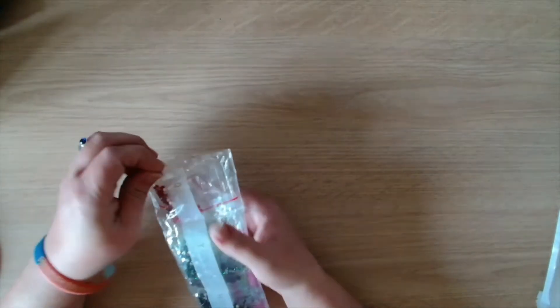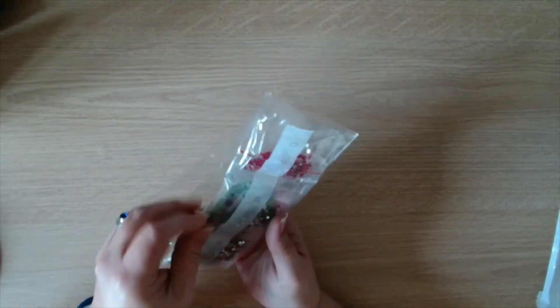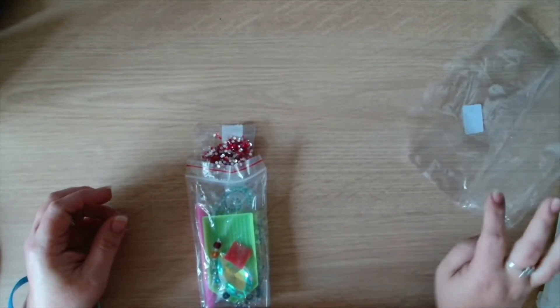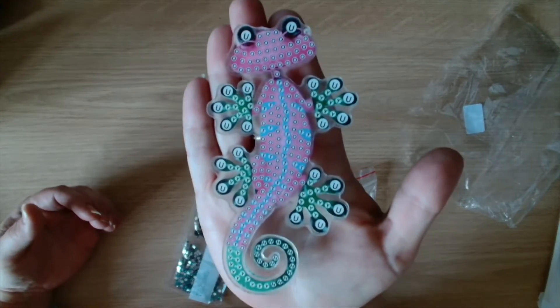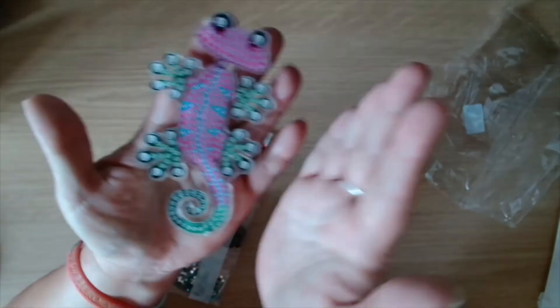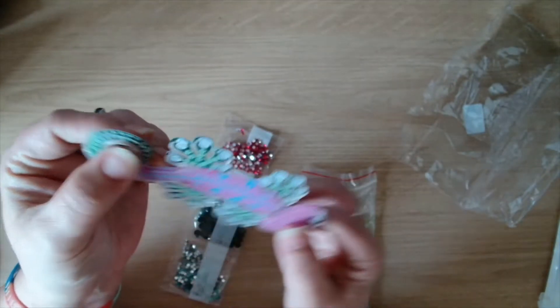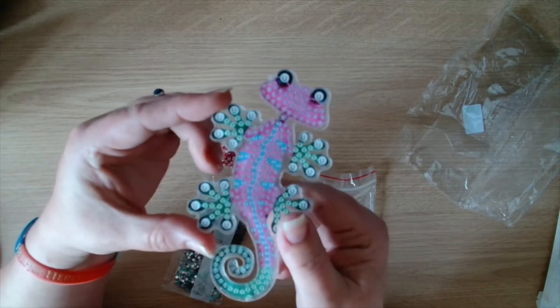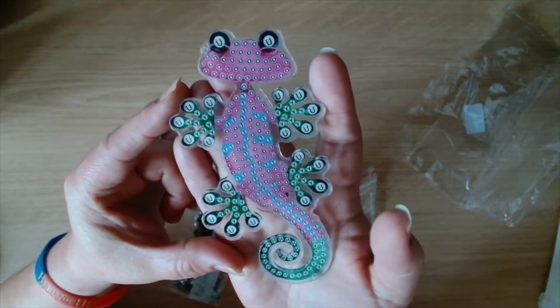First of all I picked a sun catcher, yes a sun catcher, a little kit. I picked this little gecko, this little lizard. It's double-sided so you diamond paint both sides and then it's got dangly bits and gems to attach to your window to make the sun catcher. This is super super cute, really really nice.